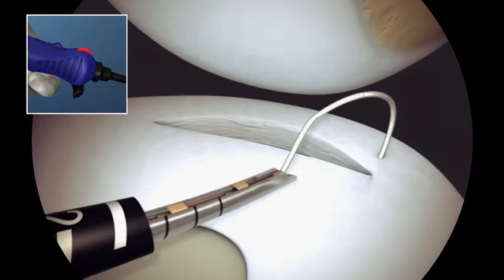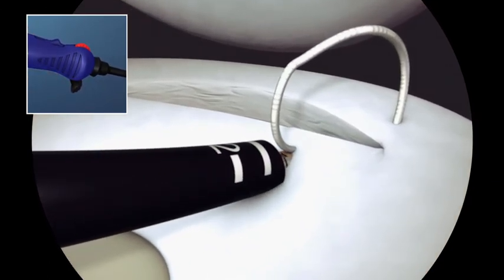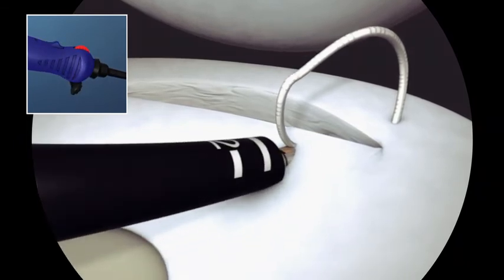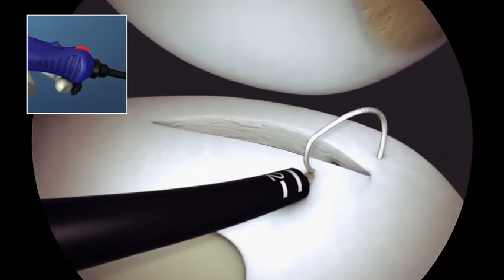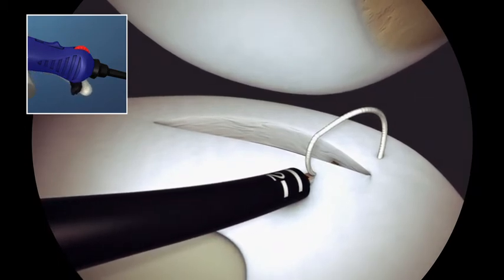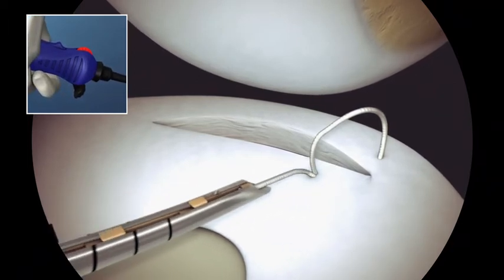To place the second implant and fix the stitch, again pierce the meniscus. Rotate the device two full revolutions, engaging the knotless fixation. Advance the trigger forward to prepare the device for implant deployment and then pull back and release to deploy the next implant.